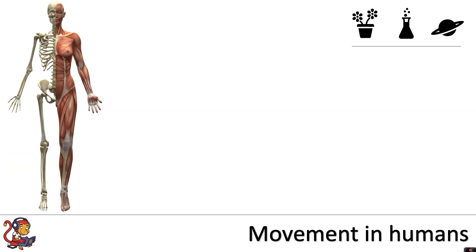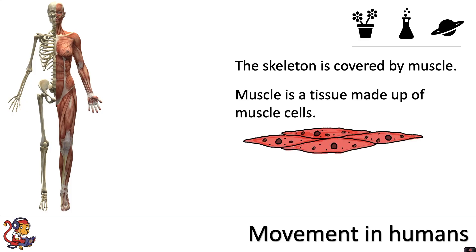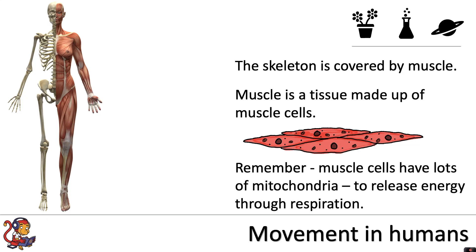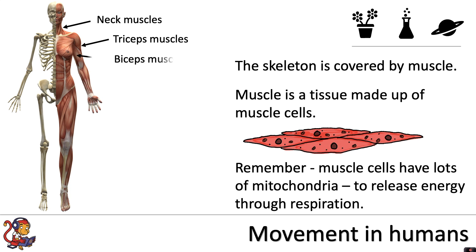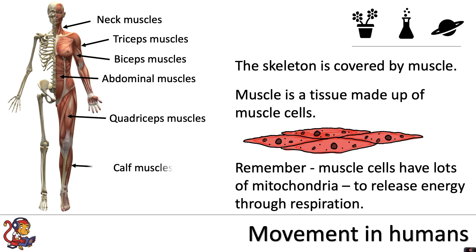The skeleton is covered by muscle. Muscle is a tissue made up of muscle cells, and muscle cells have lots of mitochondria to release energy through respiration, because movement requires a lot of energy. Some of the major muscle groups include neck muscles, triceps at the back of the arm, biceps at the front of the arm, abdominal muscles, quadriceps at the front of the thigh, and calf muscles at the back of the lower leg.